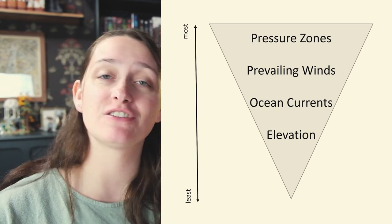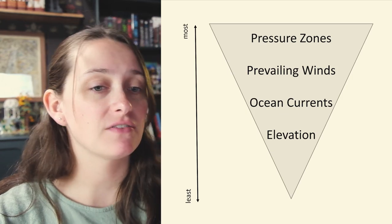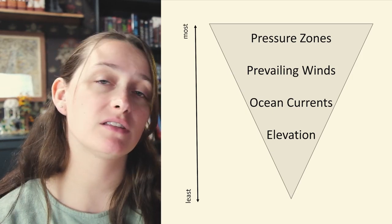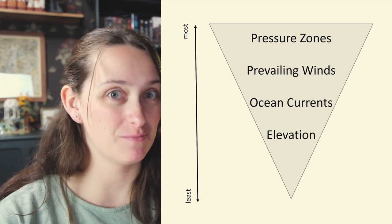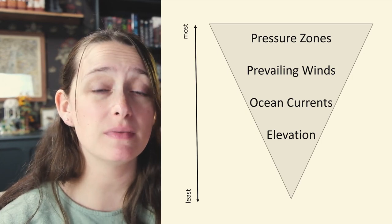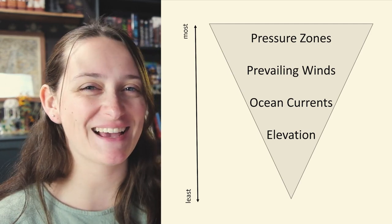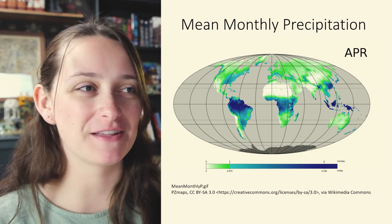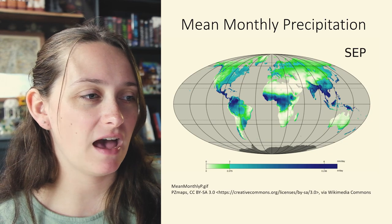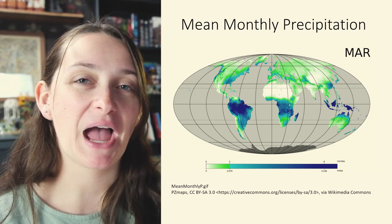Areas of significant ocean upwelling will tend toward less precipitation, and areas of significant downwelling toward more. The fourth factor is elevation. As air rises it cools and precipitates, so air moving over higher elevations loses moisture more quickly. Tall mountain ranges force most moisture to be dropped on the windward side, leaving a rain shadow on the leeward side. However, at the scale we're looking at, only extreme elevation is really going to impact precipitation significantly. Here's a fun graphic of mean monthly precipitation on Earth — dark blue is more precipitation, white is least.